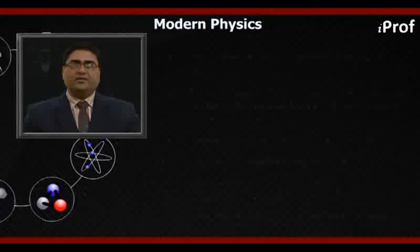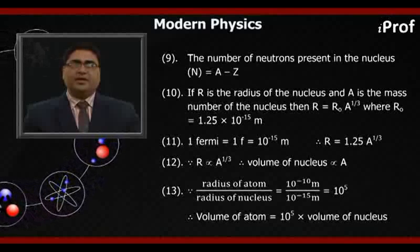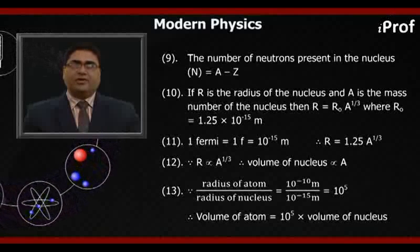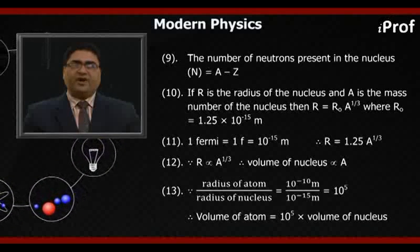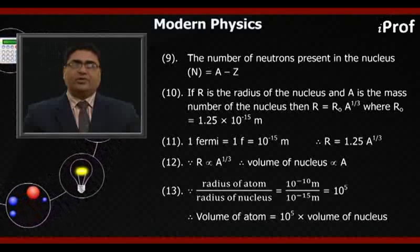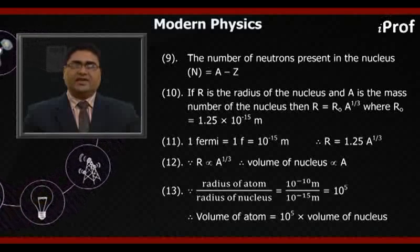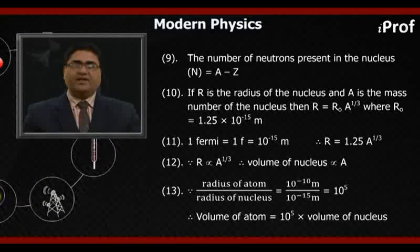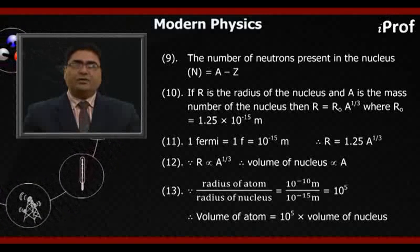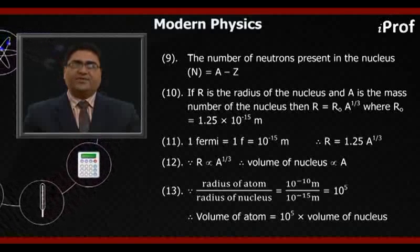Ninth, the number of neutrons present in the nucleus N equals A minus Z. Tenth, if R is the radius of the nucleus and A is the mass number of nucleus, then R equals R₀ A^(1/3) where R₀ equals 1.25 × 10^(-15) meter.